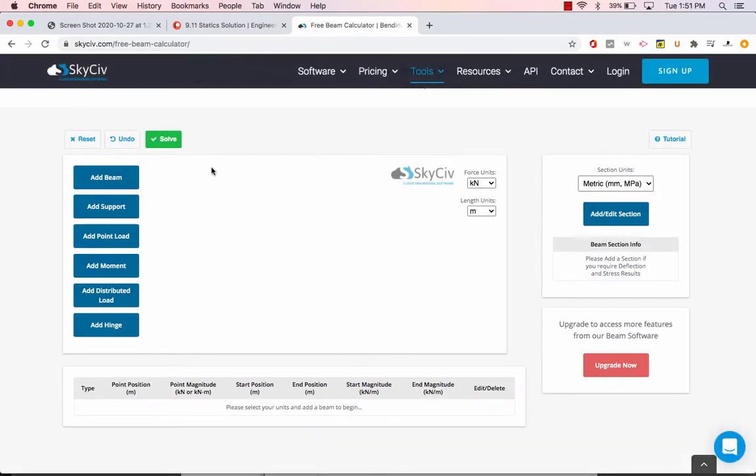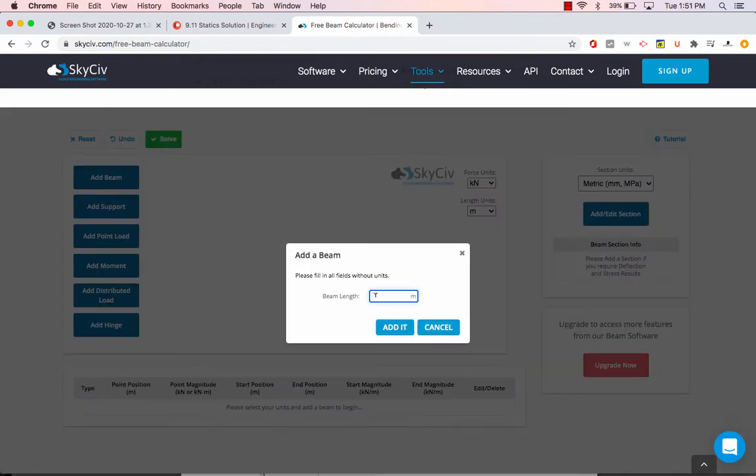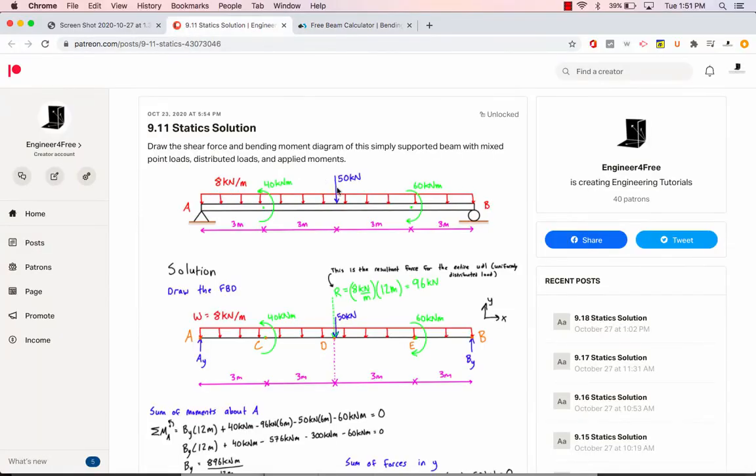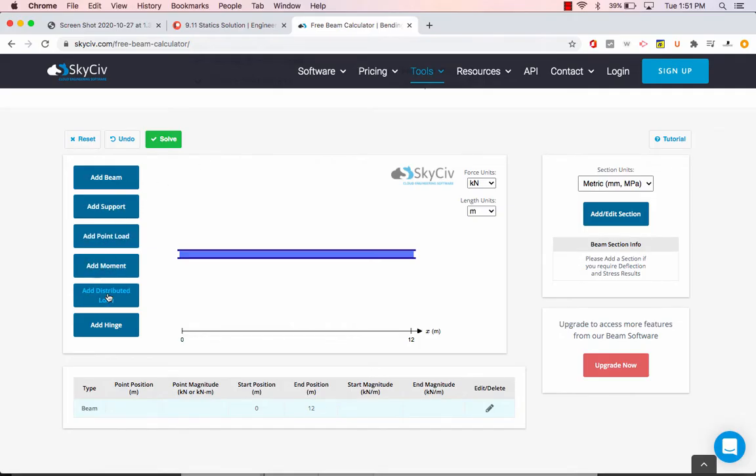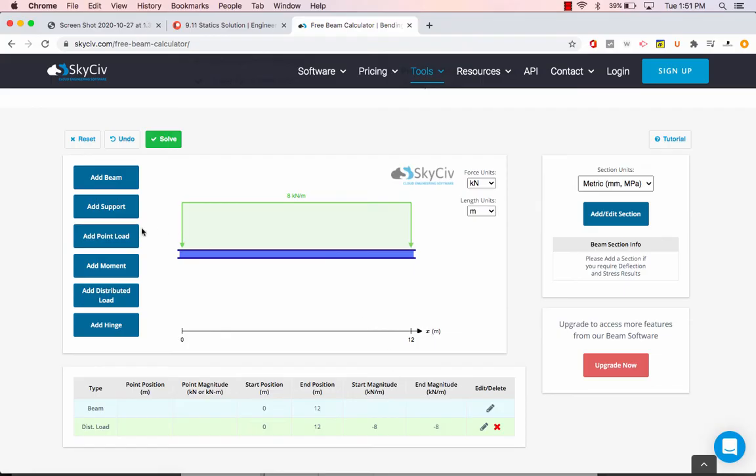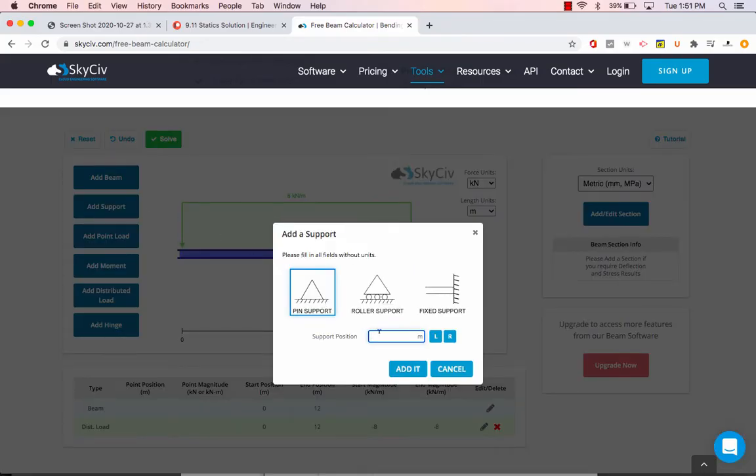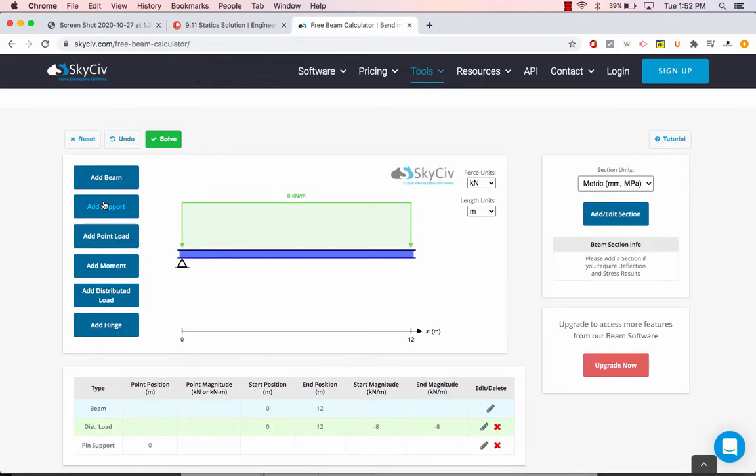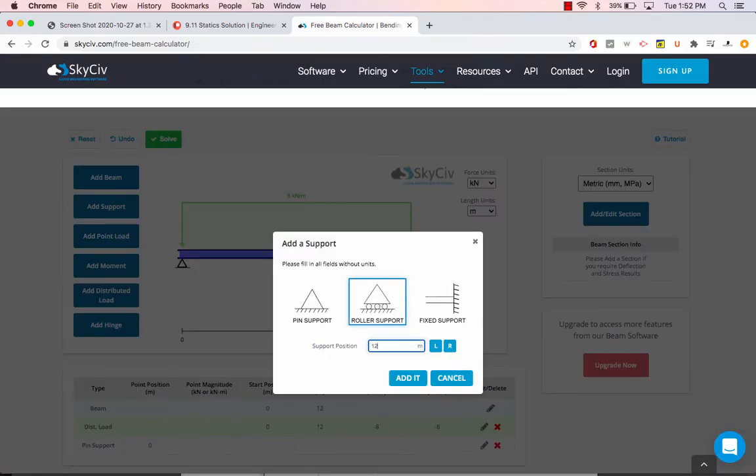What we need to do is add in the beam. The beam in the video was 12 meters long. It has a distributed load the whole way across that's 8 kilonewtons per meter. We want to add in a distributed load from zero to 12, and the magnitude at both ends was 8 kilonewtons per meter pressing down. We should probably add in the supports. There was a pin support at zero and there was another roller support on the other side at 12 meters. It was simply supported.